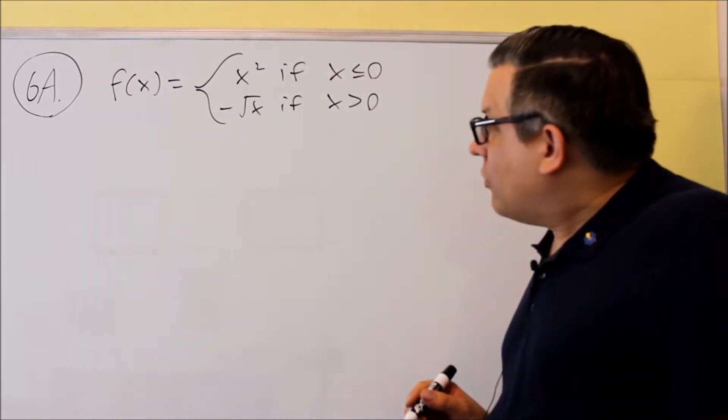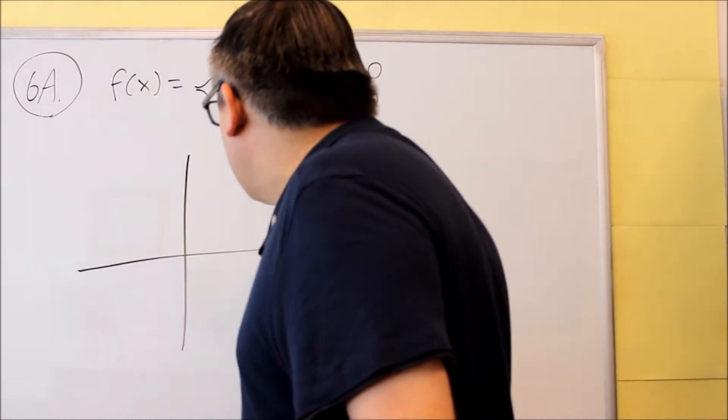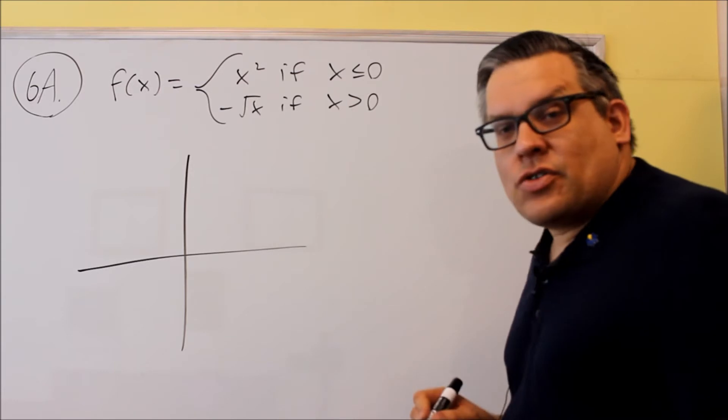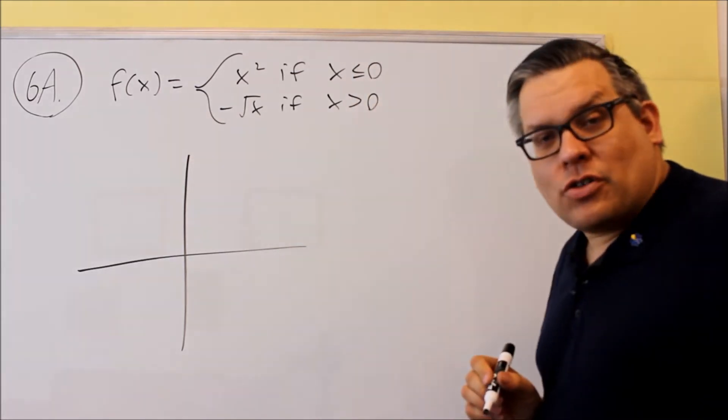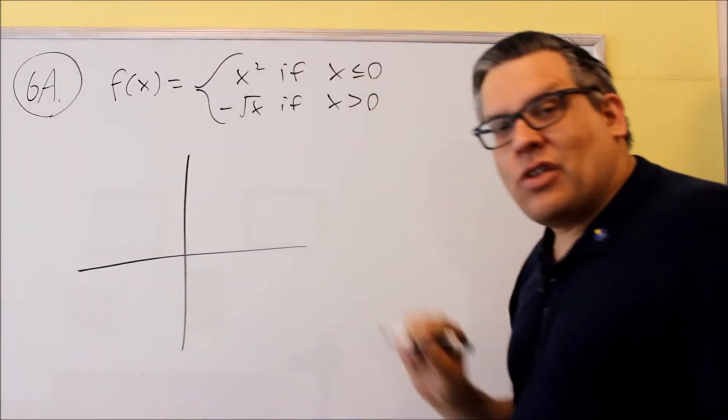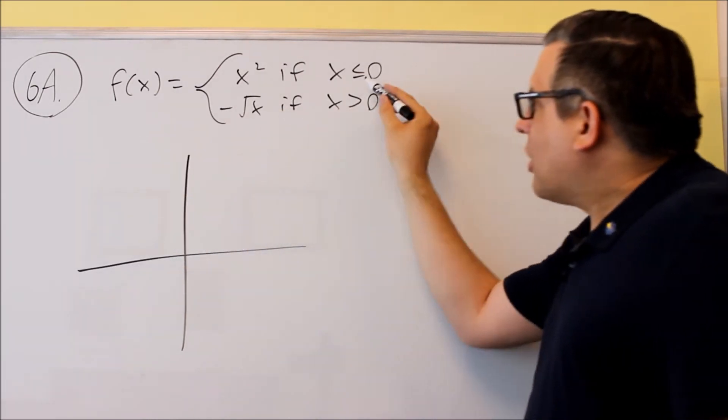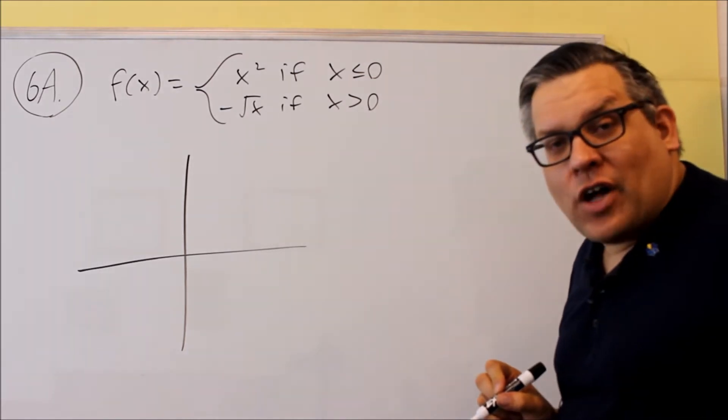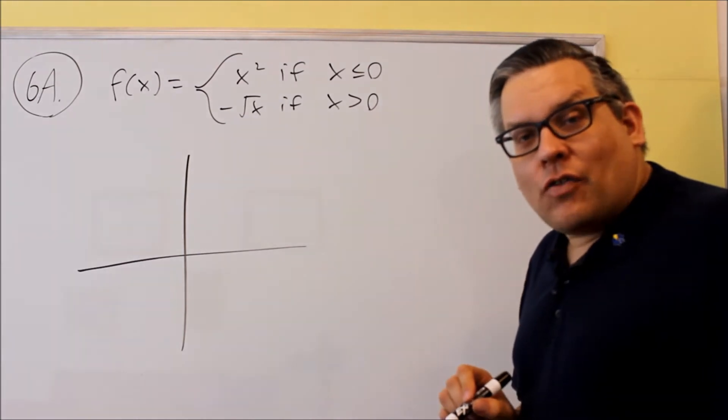So what that's going to look like is, first of all, we have x squared if you're less than zero. Now if you look at the graphs, the library functions that you have for x squared, that's the u-shaped graph that looks like this. However, it's not going to be a complete u because we're only going to have that one when you have negative x values. So it's going to look like a square, but it's only going to be the left-hand side of that.